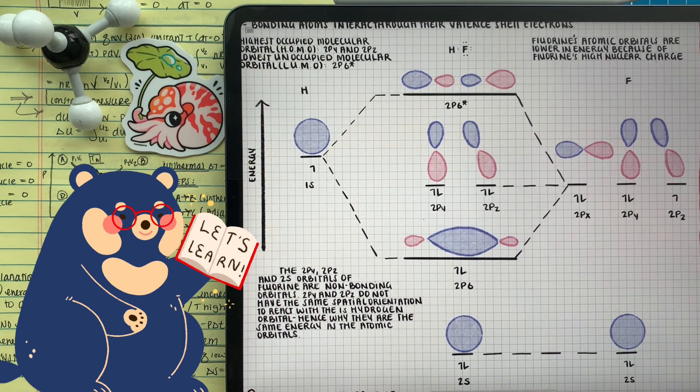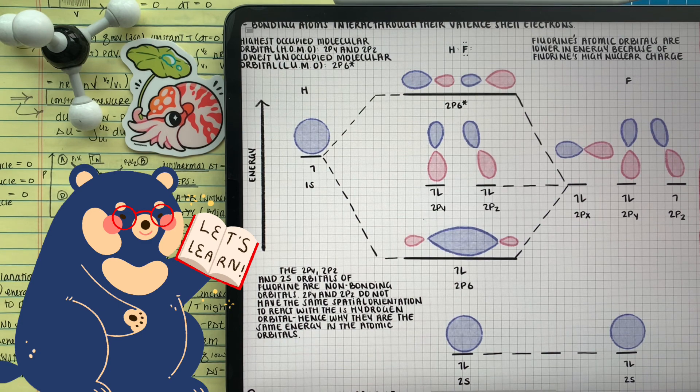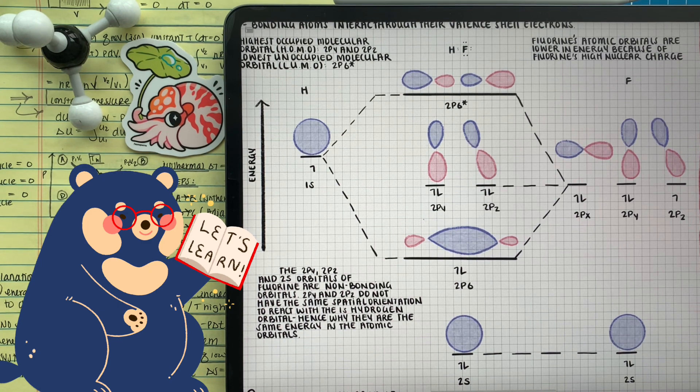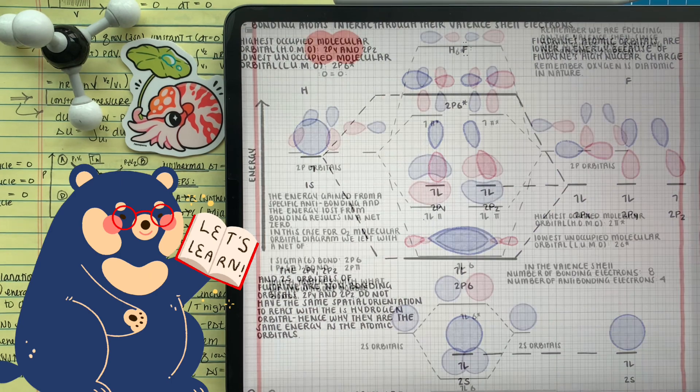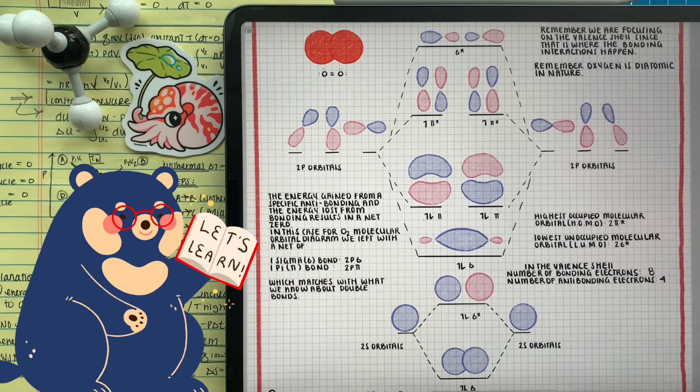You might be curious on why the atomic orbitals of fluorine are a little bit in lower energy than that of hydrogen, and it's because of the nuclear charge of fluorine pulling in those valent shell electrons closer to the nucleus, which leads to a more stable atom.